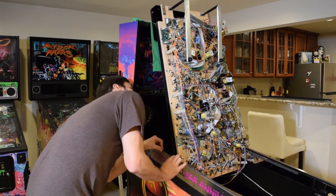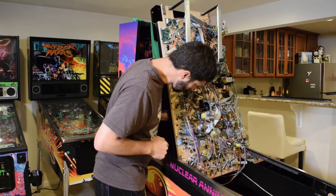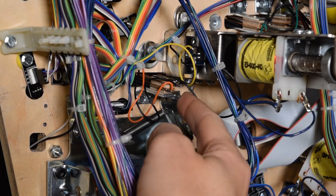Using the top of the playfield as a reference, locate the target on the bottom of the playfield. Here is the target that needs to be adjusted.